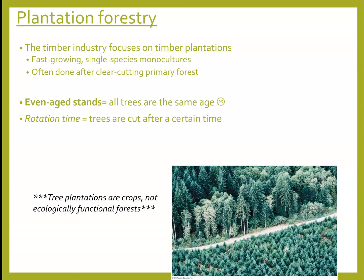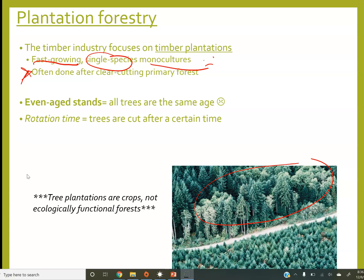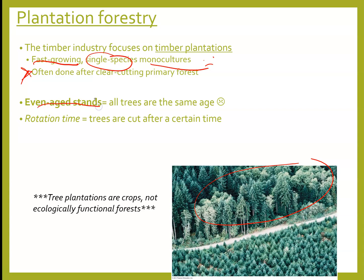Plantation forestry is a special type of forestry that the timber industry focuses on because you can very quickly grow one single species — we call that a monoculture. Monocultures are not so great when you grow one species for miles and miles. This is often done after you clear cut a diverse forest and then regrow it with just a monoculture of all the same trees. This is bad because all the trees are at an even age, and that also means they'll be cut at a certain age very quickly, rotating in and out fast. It's important to acknowledge that plantations are crops — not functional forests where animals thrive and soil stays healthy. They're just made to grow, be used, grow, and be used by people. Plantation forests aren't really actual forests — they're crops.